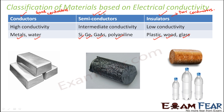We prefer to use the terms 'good conductors' and 'poor conductors' rather than 'conductors' and 'insulators.' When we say 'insulator,' it implies no current passes at all, but most materials we call insulators do allow some amount of electric current under certain situations. So it is more accurate to use 'poor conductors,' meaning they also conduct electricity, but very poorly.